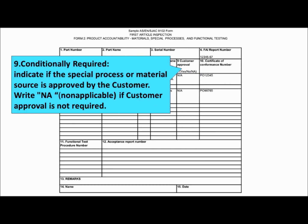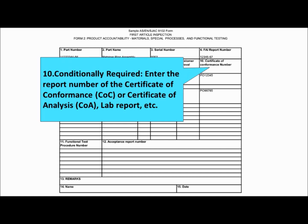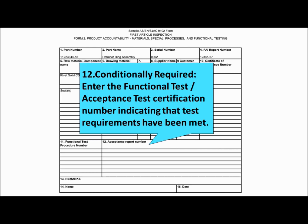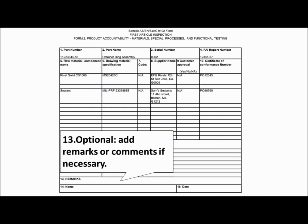Field 9 is conditionally required — please indicate if the special process or material source is approved by the customer, or write N/A (non-applicable) if customer approval is not required. Field 10 is conditionally required — please enter the report number of the Certificate of Conformance (COC), Certificate of Analysis (COA), lab report, etc. Field 11 is conditionally required — please enter the functional test procedure or acceptance test procedure number if applicable. Field 12 is conditionally required — please enter the functional test or acceptance test certification number indicating that test requirements have been met. Field 13 is optional — please add remarks or comments if necessary.